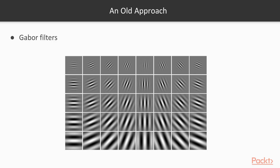A very old approach to perform pattern recognition is using what's called Gabor filters. These are already around 40 years old, but still studied nowadays due to their simplicity. The idea is to convolve the picture with these filters. In a convolutional neural network, we are doing the same with some randomly initialized filters, while we modify them during the learning to minimize the cost function.